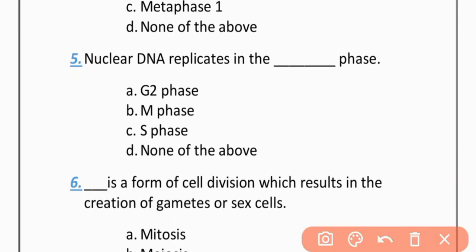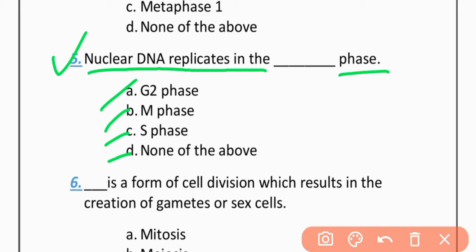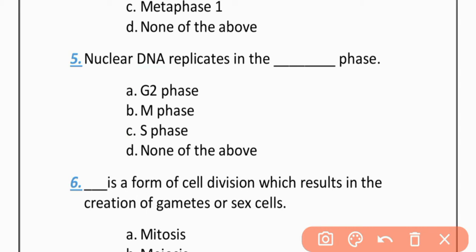MCQ 5: Nuclear DNA replicates in which phase? Option A: G2 phase. Option B: M phase. Option C: S phase. Option D: None of the above. The correct option is C — S phase. DNA replication occurs in S phase.